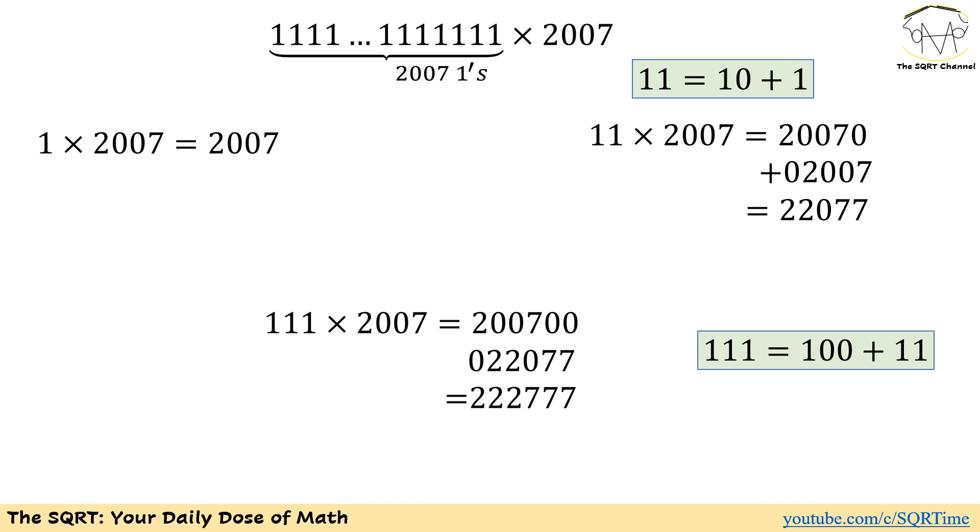For 100 times 2007, we just append two zeros on the right-hand side. If we want to add them together, we are going to end up with 222777.